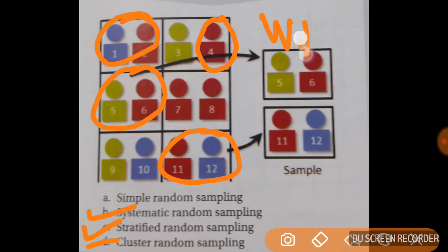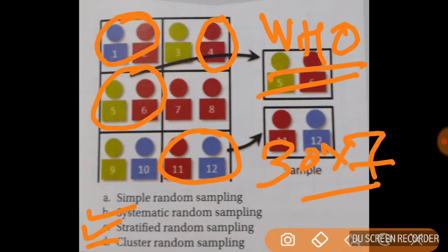You know that WHO has a technique of using 30 into 7 technique. That is 30 clusters each containing 7 children who are 12 to 23 months of age and are completely immunized for primary immunization till measles vaccine. WHO follows this criteria in India for evaluation of immunization coverage. 30 into 7 technique. So it can be one of your future questions. Cluster random sampling.